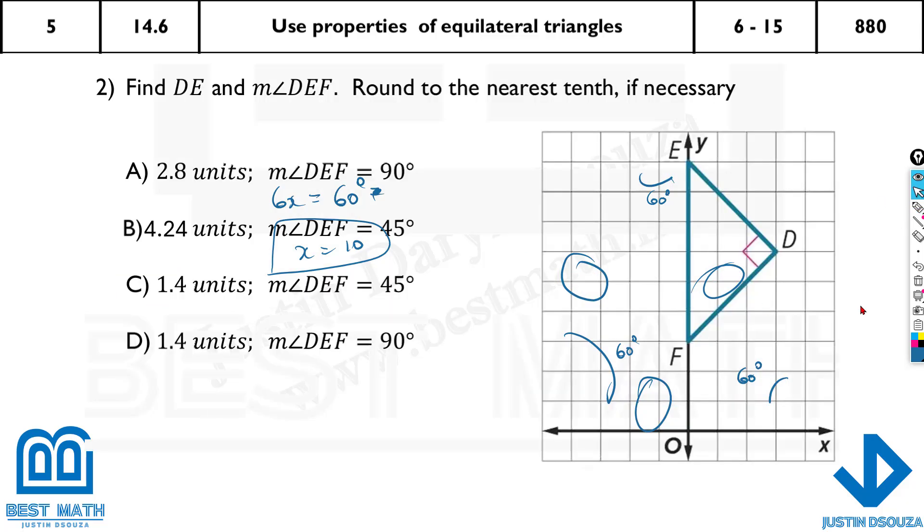Now what about the next one? Here we have to solve for the DE, the side length DE and then angle DEF. DEF is this angle. They have not told anything else but the figure is given to us. We need to use distance formula. I'll do distance formula and then I'll teach you some other shortcuts as well.